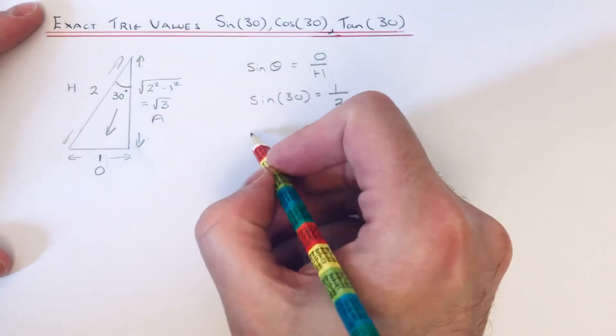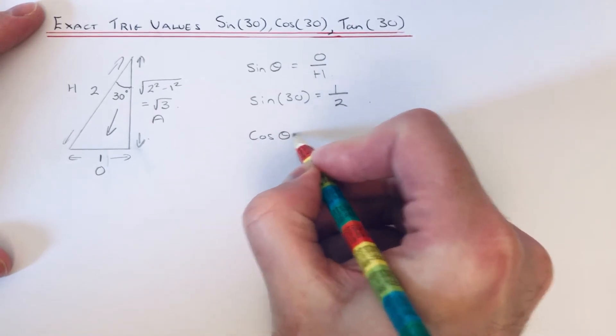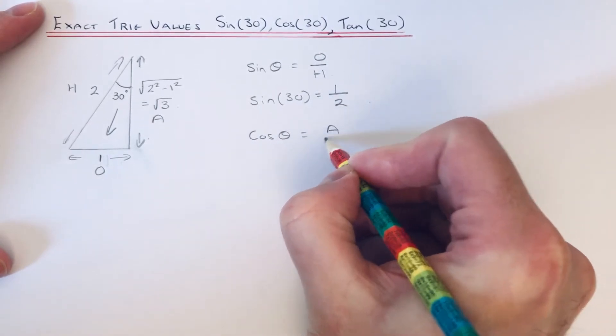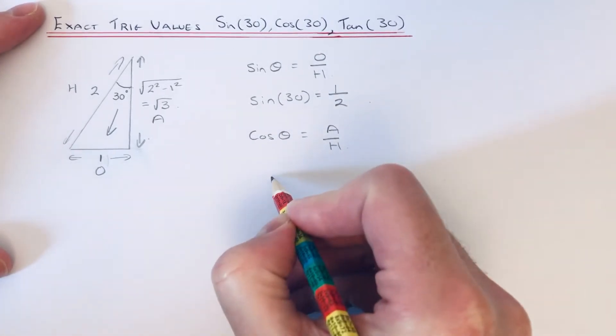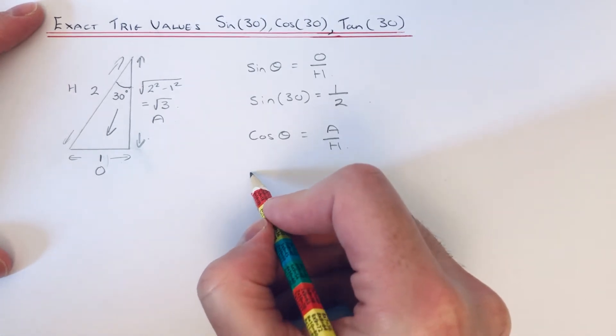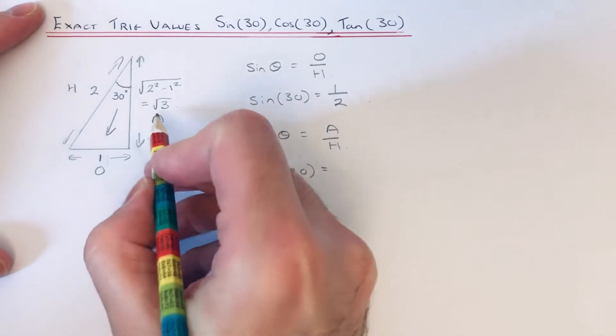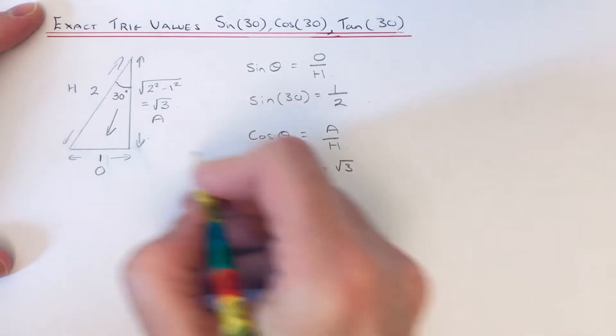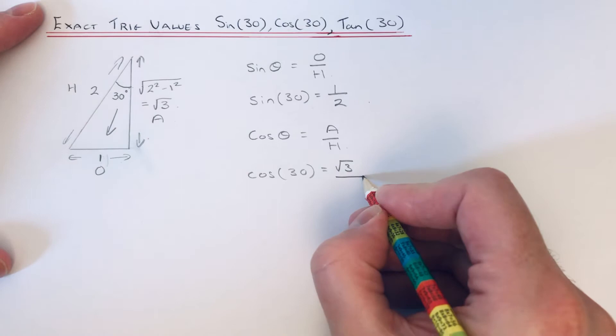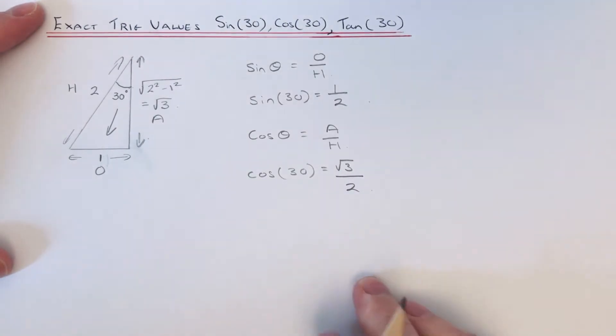Let's do the value for cos. Cos θ is the adjacent over hypotenuse. So if we substitute these numbers in, cos(30°) equals—our adjacent is √3 and the hypotenuse is 2—so cos(30°) is √3 over 2.